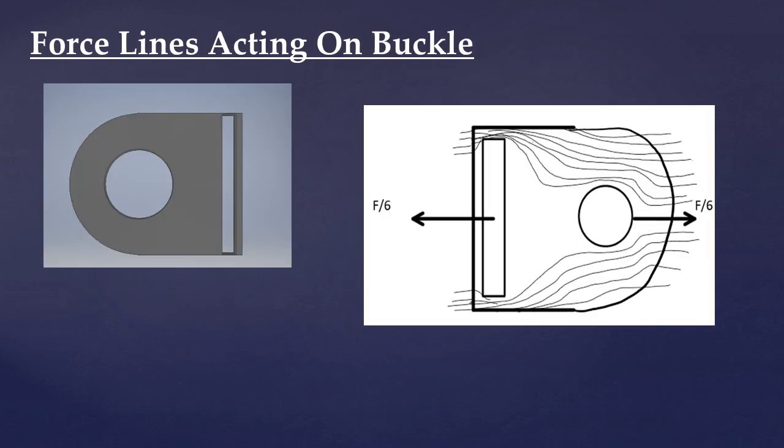These are rough estimates of the force lines that are acting on the buckle. As we can see here, from the back end to the front side of the design, the force lines avoid any openings within the buckle design.